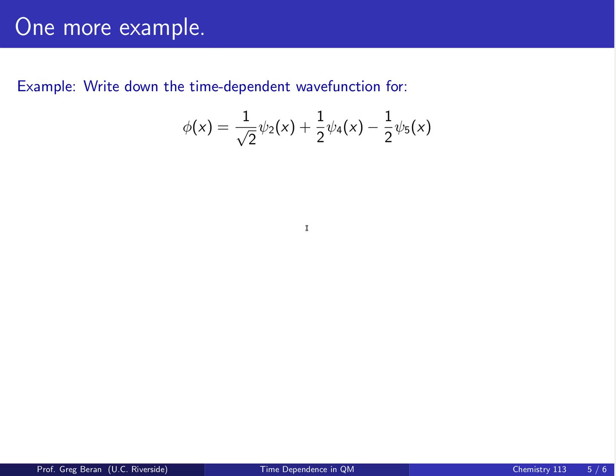Why don't you try one more example? Write down the time-dependent wave function for this φ(x). Again, for the particle in the box. φ(x) equals 1 over square root 2 ψ₂(x) plus 1 half times ψ₄(x) minus 1 half ψ₅(x). Pause the video, work out the solution, hit play when you're ready.